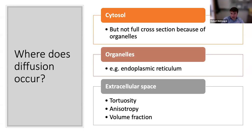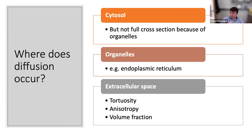This diffusion happens everywhere: in the cytosol — though not across the entire cross section because organelles like the ER and mitochondria take up space — and also within the ER and mitochondria themselves, where things can diffuse as well. Stuff can also move around in the extracellular space. When firing action potentials, you're taking sodium out of the extracellular space and putting it inside; how cells interact with sodium, potassium, glucose, and oxygen in the outside space affects them in non-synaptic ways.